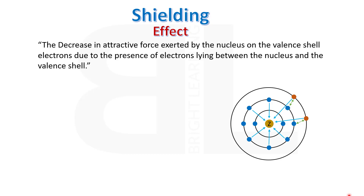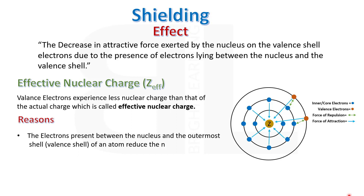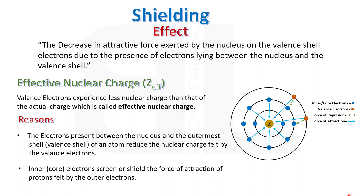Valence electrons experience less nuclear charge than the actual charge of the nucleus; this reduced charge is called effective nuclear charge. The electrons present between the nucleus and the outermost shell reduce the nuclear charge felt by the valence electrons — inner electrons screen or shield the force of attraction of protons felt by the outer electrons.